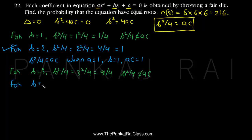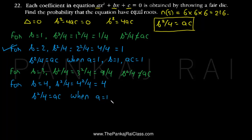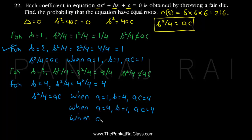For b = 4, b²/4 = 16/4 = 4. We need ac = 4, and there are three such combinations: a = 1 and c = 4 giving ac = 4; a = 4 and c = 1 giving ac = 4; and a = 2 and c = 2 giving ac = 4. So there are three more favorable combinations.